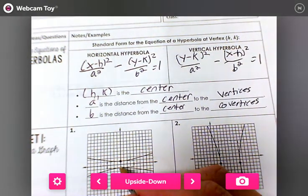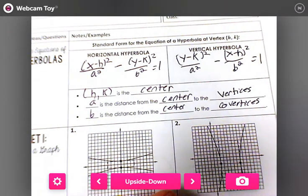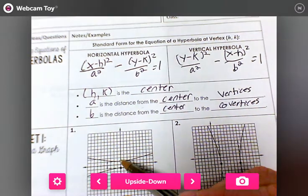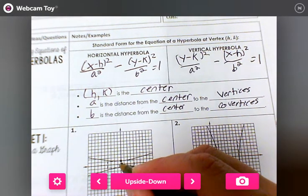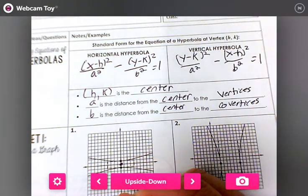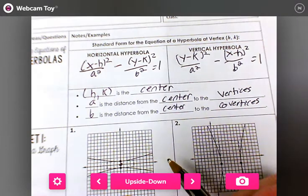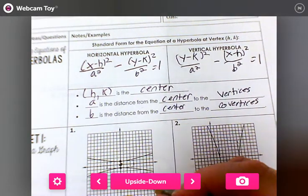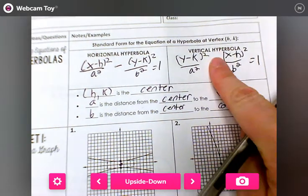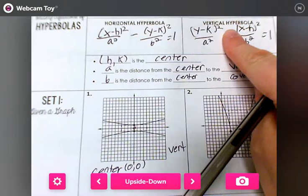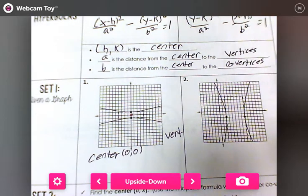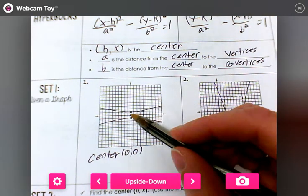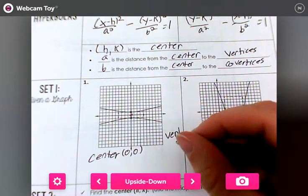In this case, our center is what? What's in between these two? What point would this be right here? Zero, zero. It's vertical because it's up and down, so I know I'm going to look at this one. I'm looking, this is 1 away, so my a equals 1.